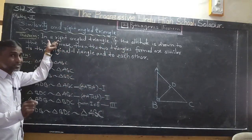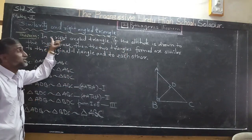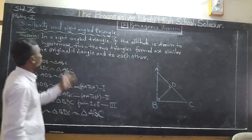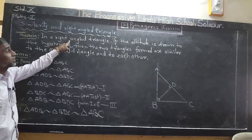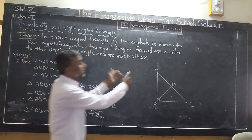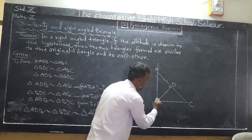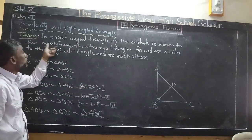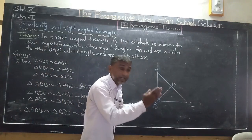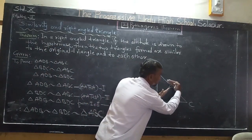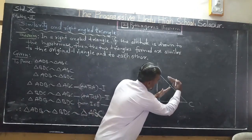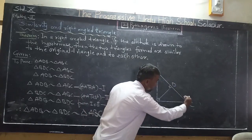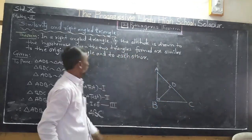To identify what is given, read carefully the first sentence which is the antecedent — it is given — and the consequent sentence after 'then' is what you have to prove. In this theorem, the given information is: triangle ABC is a right-angled triangle with angle B = 90 degrees, and if the altitude is drawn to the hypotenuse, segment BD is perpendicular to hypotenuse AC.